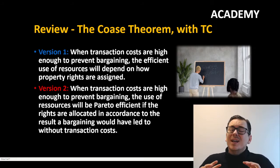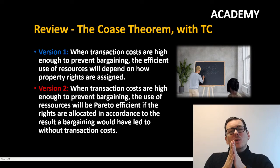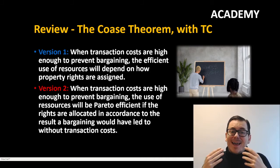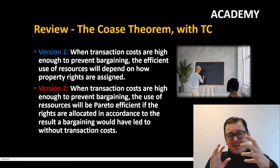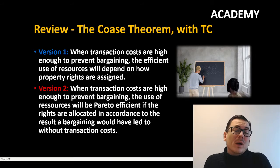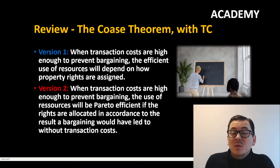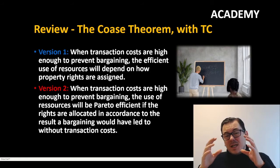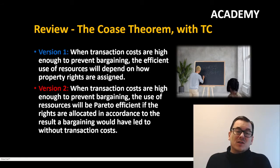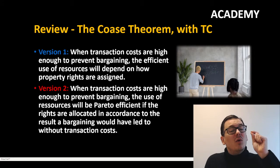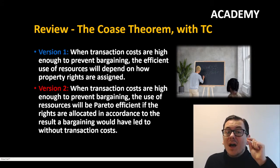When we have transaction costs, things change. Now we consider the range — when are there too many transaction costs? This version of the theorem stipulates that when transaction costs are high enough to prevent private bargaining, the efficient use of resources will depend on how property rights are assigned. The second version states that when transaction costs are high enough to prevent bargaining, the use of resources will be Pareto efficient if the rights are allocated in accordance with the result that bargaining would have led to without transaction costs.